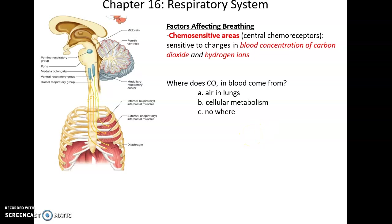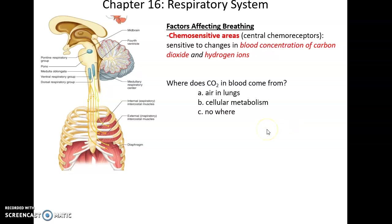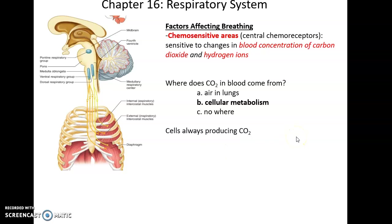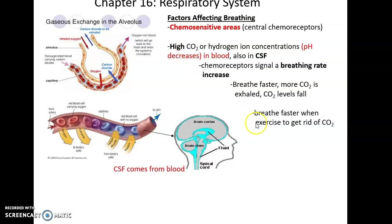Chemosensitive areas are regions in the brain that receive information about the concentration of carbon dioxide and hydrogen ions in the bloodstream. Monitoring CO2 levels and hydrogen ions allows the body to know how fast or slow we need to breathe. Carbon dioxide in the blood originally comes from cellular metabolism — our cells are always producing CO2 as they produce ATP. High levels of carbon dioxide or hydrogen ions result in a low pH, making the blood more acidic.